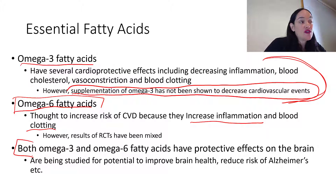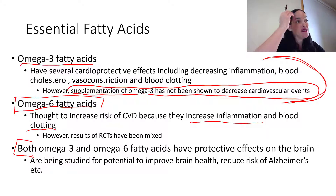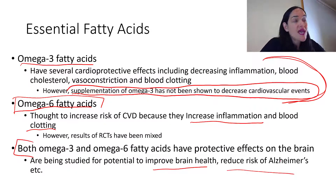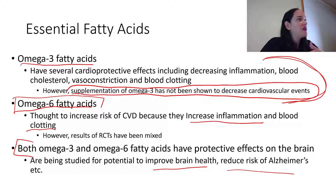As a side note, both omega-3s and omega-6s are being studied for their potential to be protective for brain health. Infants and developing fetuses have an increased need for these fatty acids because they're really important in brain development. Supplementation and adequate intake may also help improve overall brain health in older people and reduce the risk of Alzheimer's disease — though these relationships still require more research. Eating fatty fish, nuts, and whole foods will likely provide these benefits.